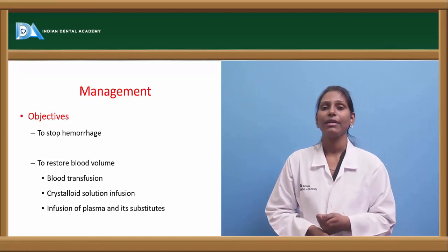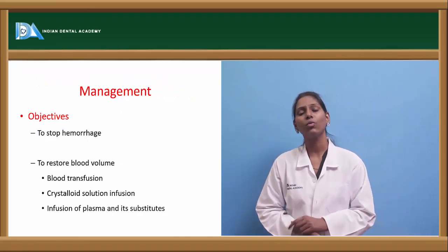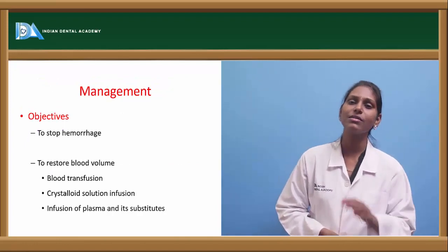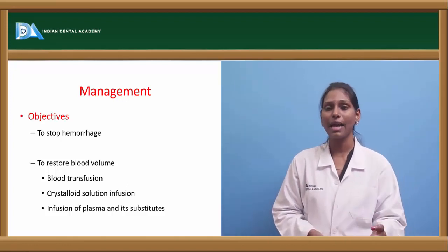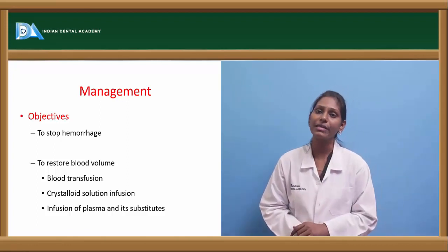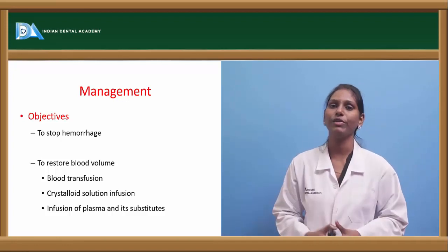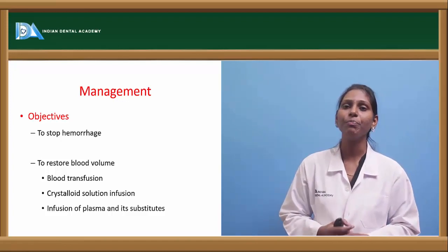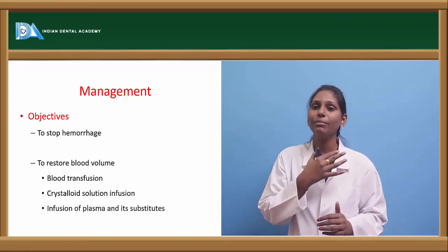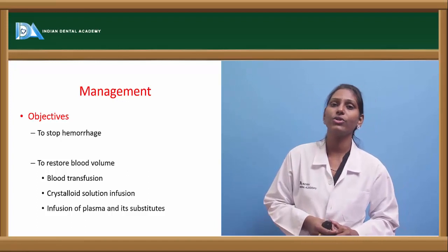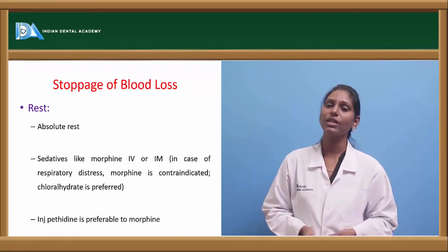After determining blood volume, we move to management. The primary objectives are: first, to stop the hemorrhage; second, to restore the blood volume. Stopping hemorrhage is hemostasis, achieved by systemic or local measures. Restoring blood volume is done by blood transfusion, crystalloid solution infusion, and infusion of plasma and its substitutes.